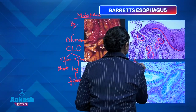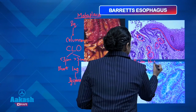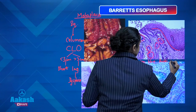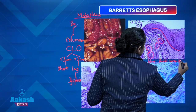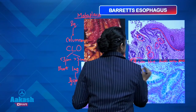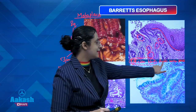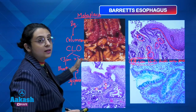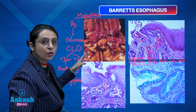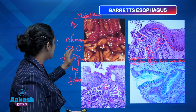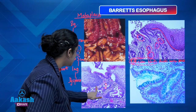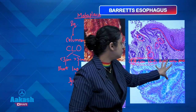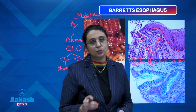Alcian blue stain: A for alcian, A for acidic mucin — it stains the acidic mucin of the goblet cell vacuole at pH 2.5. Barrett's esophagus is therefore positive for alcian blue stain. It is a precursor lesion for esophageal adenocarcinoma in the lower esophagus and is a complication of chronic GERD. There is metaplastic transformation from squamous lining to goblet-cell lined intestinal glands, positive for alcian blue stain for acidic mucin at pH 2.5.